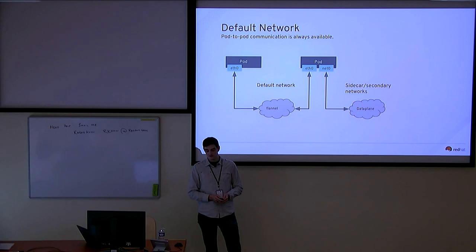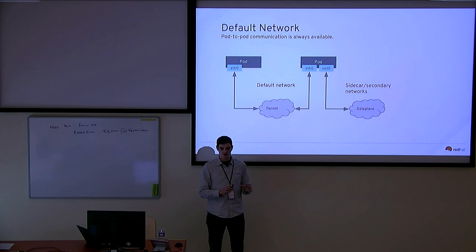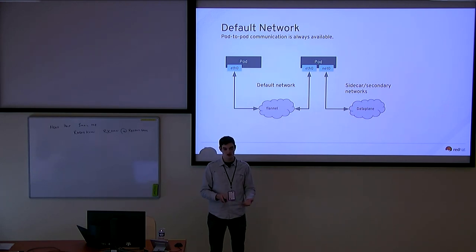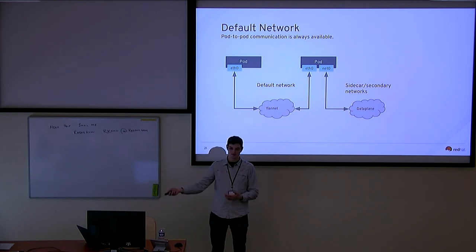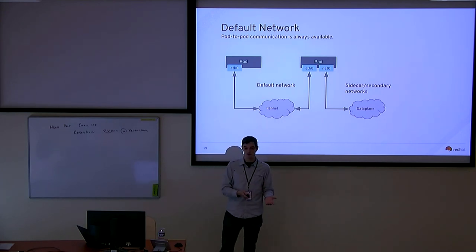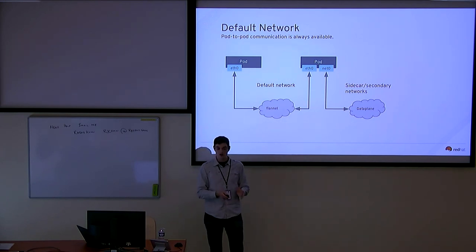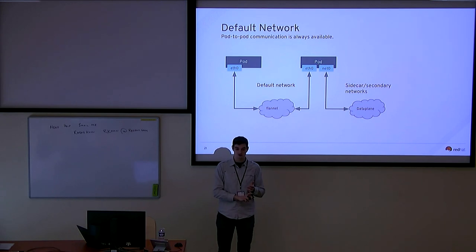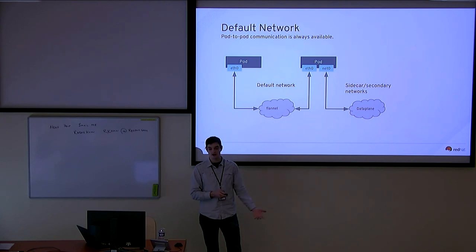Kubernetes requires a cluster-wide default network with certain guarantees. The specification calls that the default cluster-wide network, and that provides backwards compatibility between what Multus does with multiple networks and what Kubernetes expects. It always attaches the pod to the default cluster-wide network, and all additional ones are secondary sidecar networks — you always have the default one, plus zero or more secondary networks. The secondary networks don't have quite the same guarantees as the default — for example, no microservices on those, no network policy. We're going to work on adding that in the future.